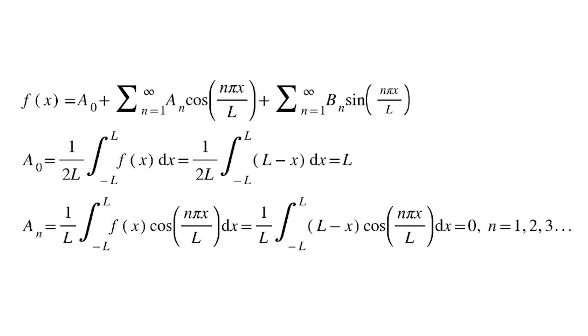aN, do the same thing, 1 over L times the integral of negative L to L of f of x cosine, n pi x over L dx, replace f of x with L minus x, do the integration, and you get a wonderful number of 0, where n is equal to 1, 2, 3, etc, etc.